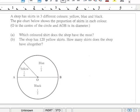Question number 3 says: A shop has skirts in 3 different colors - yellow, blue and black. The pie chart below shows the proportion of skirts in each color. O is the center of the circle and AOB is its diameter. Part A asks which colored shirt does the shop have the most. Part B states the shop has 120 yellow skirts, and asks how many skirts does the shop have altogether.